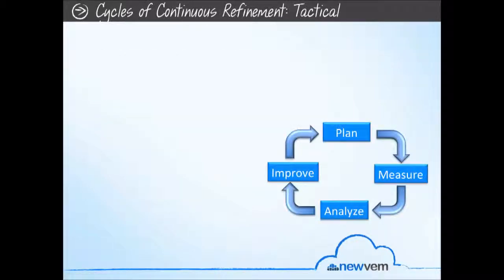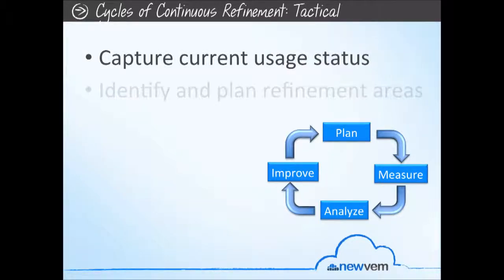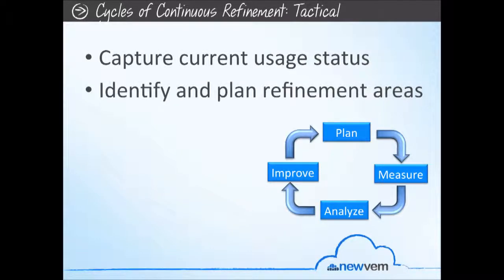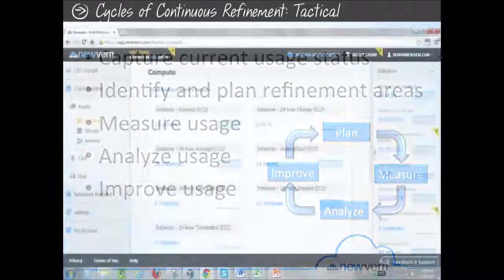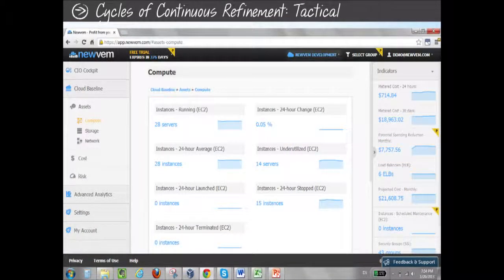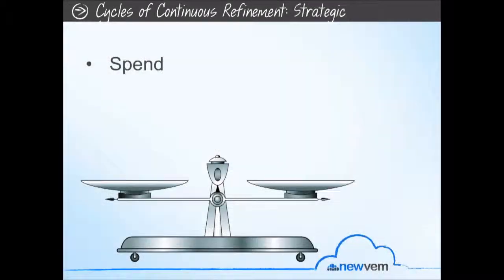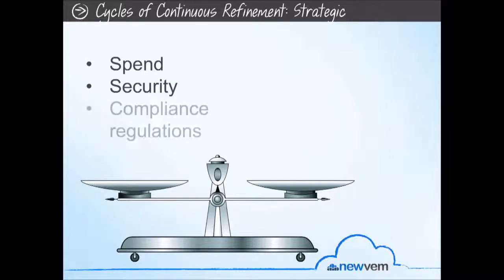In this cycle of continuous refinement, you'll be able to take a tactical usage-out approach to improving your cloud usage, such as: capture current usage status, identify and plan refinement areas, measure usage, analyze usage, and improve usage. This also provides a strategic view to continually improve your cloud usage in alignment with business requirements — balancing spend optimization, eliminating security vulnerabilities, and obtaining the data required to prove you're meeting compliance regulations.